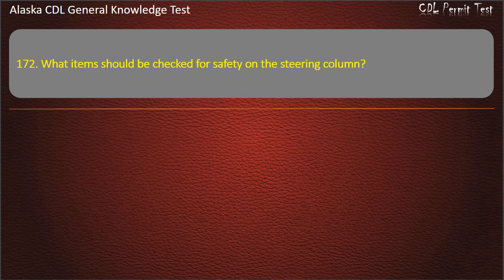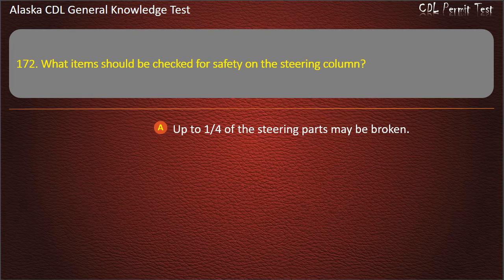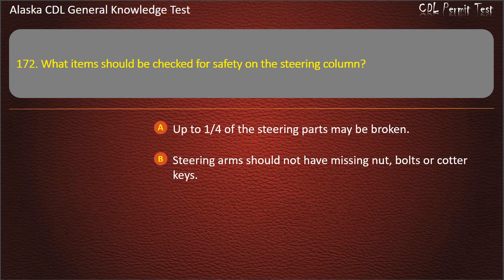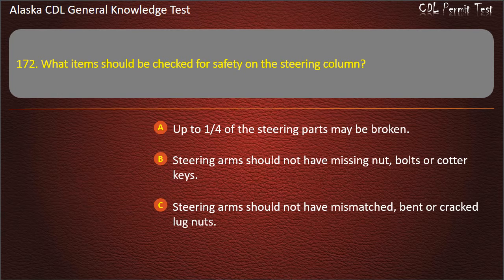Question 172. What items should be checked for safety on the steering column? Up to one-fourth of the steering parts may be broken; steering arms should not have missing nut, bolts or cotter keys; or steering arms should not have mismatched, bent or cracked lug nuts. Answer: Steering arms should not have missing nut, bolts or cotter keys.